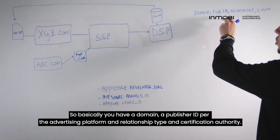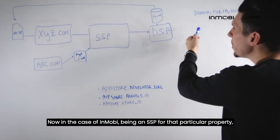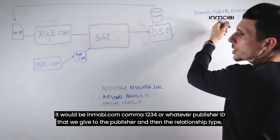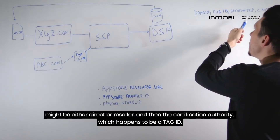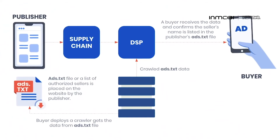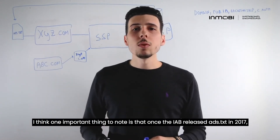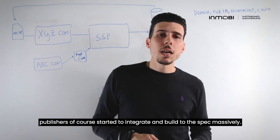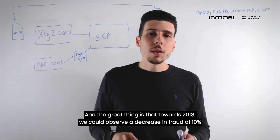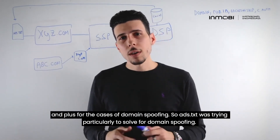Let's look at how the template and schema look. You have a domain, a publisher ID per the advertising platform, relationship type, and certification authority. In the case of InMobi being an SSP for a particular property, it would be immobi.com, comma, 1234 or whatever publisher ID we give that publisher, and then the relationship type would be either direct or reseller, and then the certification authority, which is a TAG ID. One important thing to note is that once IAB released ads.txt in 2017, publishers started integrating and building to this spec massively, and by 2018 we observed a decrease in fraud of 10% or more specifically for domain spoofing.